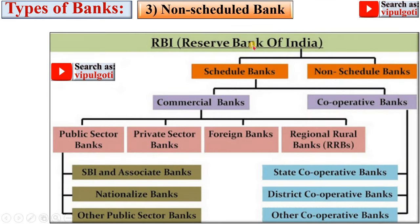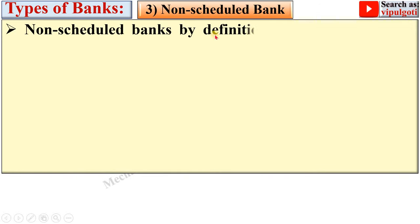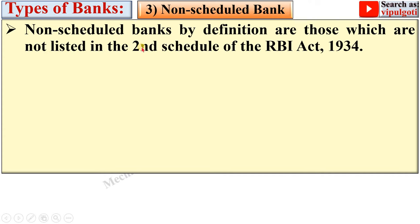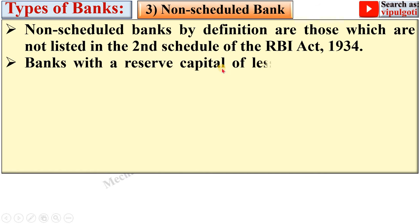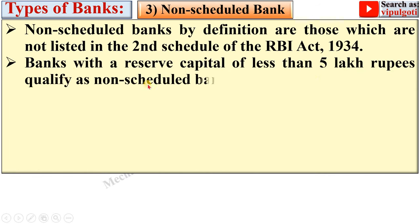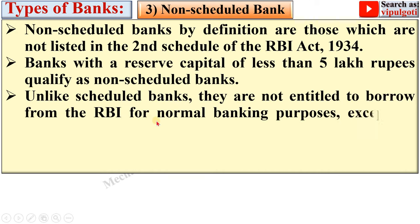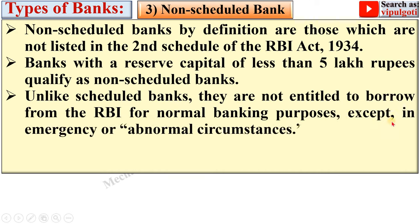Now the next type: Non-Scheduled Banks. By definition, Non-Scheduled Banks are those which are not listed in the second schedule of the RBI Act 1934. Banks listed in the second schedule are Scheduled Banks; if they are not listed, they are called Non-Scheduled Banks. Banks with a reserve capital of less than 5 lakh rupees qualify as Non-Scheduled Banks. Unlike Scheduled Banks, they are not entitled to borrow from the RBI for normal banking purposes, except in emergency or abnormal circumstances.